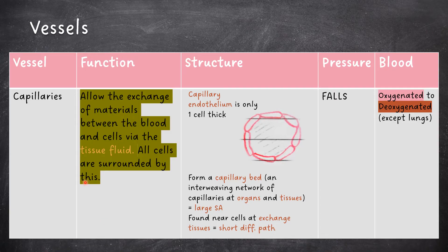Capillaries allow the exchange of materials between the blood and cells via the tissue fluid, which all cells are surrounded by. The capillary endothelium is only one cell thick, allowing a fast rate of exchange of substances between the blood and the tissue fluid. Capillaries form capillary beds, which are interweaving networks of capillaries at organs and tissues, providing a large surface area for the exchange of substances. They are found near cells in exchange tissues, providing a short diffusion path. Blood pressure falls in the capillaries, and blood changes from oxygenated to deoxygenated, apart from at the lungs.